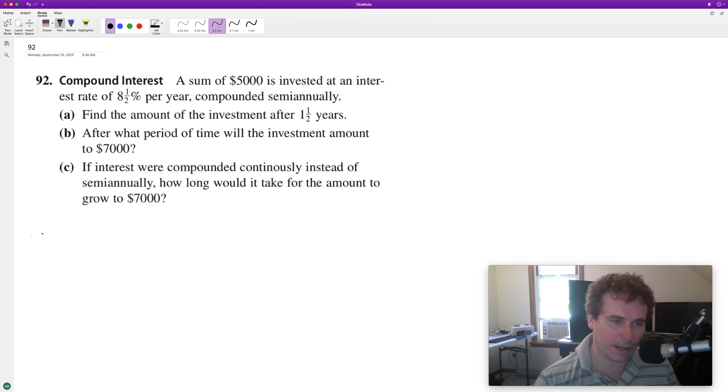We want to find the amount of the investment after 1.5 years. That's going to be $5000 times 1 plus the interest rate, which is 0.085 for 8.5%, divided by 2 since it's semi-annually. That's how many times we're taking it per year. We want to find after 1.5 years, so we're going to take 1.5 years times 2 because that's how many times we take the interest per year.